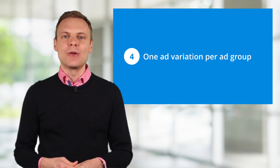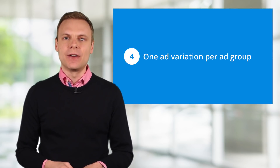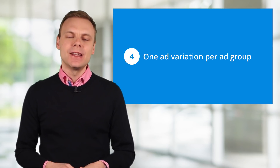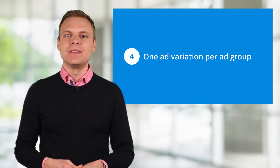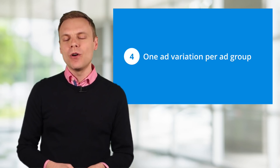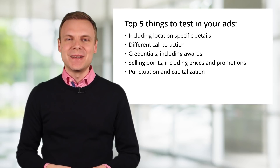Mistake number 4 is only having one ad variation per ad group. You always want to be testing new things, and this includes your ad variations. If you only have one ad in each of your ad groups, you're likely to be missing out. Having two ads within each of your ad groups allows you to test different calls to action and messaging to see what works and what doesn't. Here are five things you can start testing: include location-specific details, test different calls to action, include credentials and awards, try different selling points including prices and promotions, and try testing changes to punctuation and capitalization. You should always be testing.